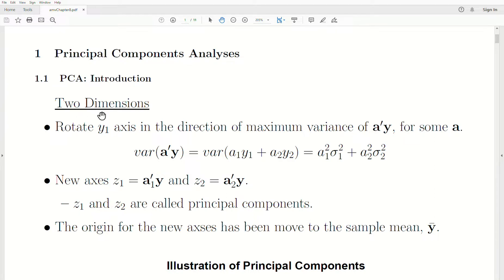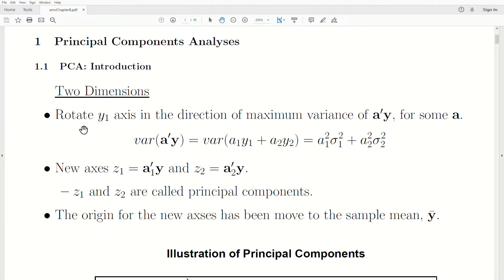First, let's look in two dimensions. We plot our data in the y1, y2 axes and we want to rotate the y1 axis in the direction of maximum variance of the linear combination a'y. This means we have the variance of a transpose y, which equals a1 squared sigma1 squared plus a2 squared sigma2 squared, and we want to find the a1 and a2 that creates this maximum. Once we find that axis, we call it z1, and z2 has to be perpendicular to that. z1 and z2 are called principal components. The origin of the new axes is moved to the sample mean y-bar.